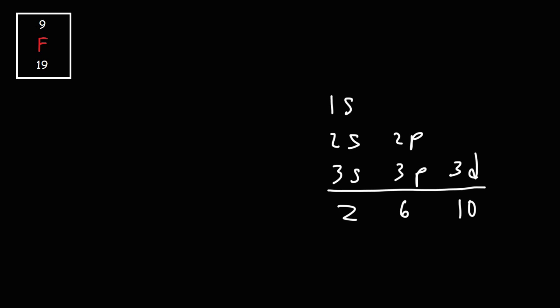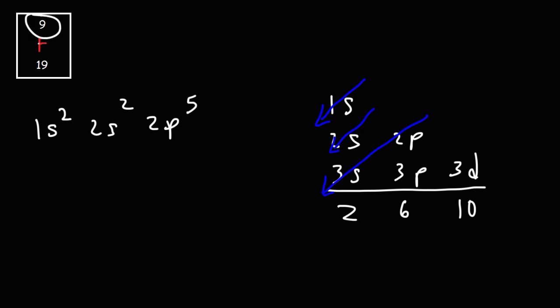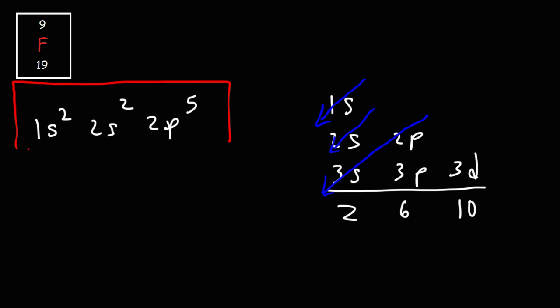We're going to start with 1s — s can hold two electrons. Then after 1s is 2s, which can also hold up to two electrons. Then after 2s it's 2p. P can hold up to six electrons, but we don't need six; we only need five to get up to nine, because two plus two plus five is nine. So this is the ground state electron configuration of the element fluorine.